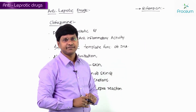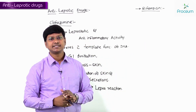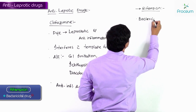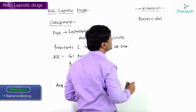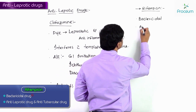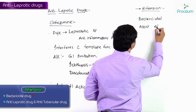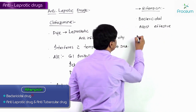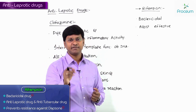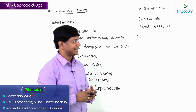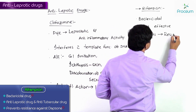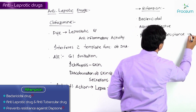The other anti-leprotic drug is rifampicin. Rifampicin is a bactericidal agent and is the most effective drug used in the treatment of leprosy. An important advantage is that rifampicin prevents the development of resistance to dapsone.